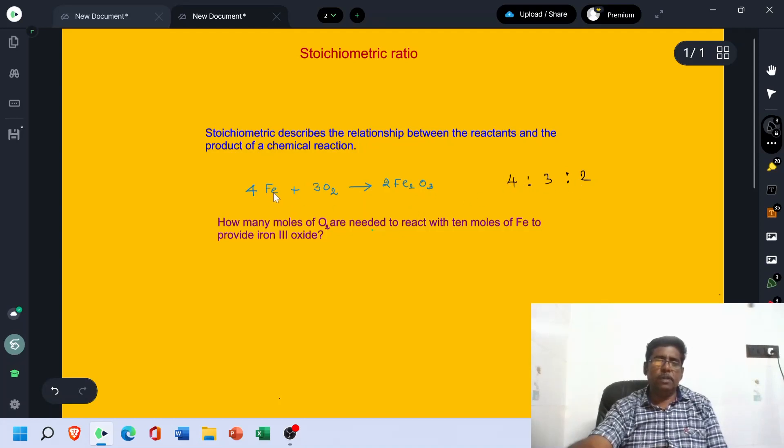4 represents 4 moles of Fe, 3 indicates 3 moles of O2, and 2 signifies 2 moles of Fe2O3.